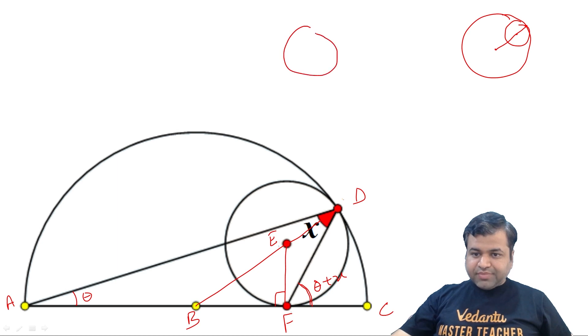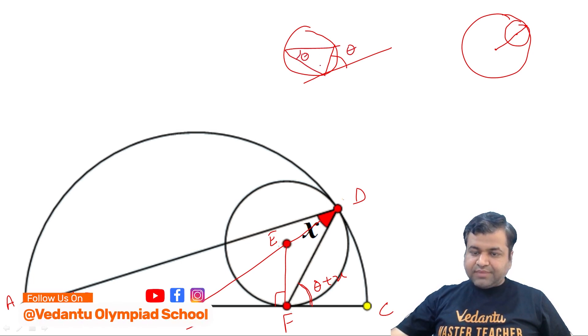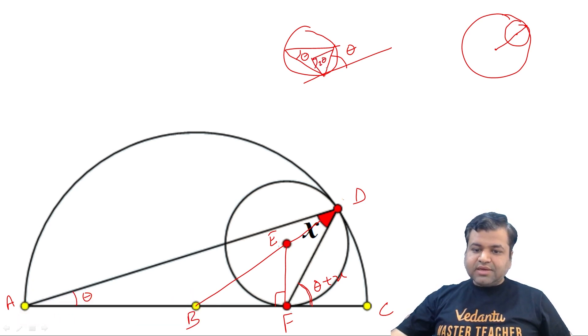And we know one other thing: if there is any tangent, that means angle FED should be 2 theta plus 2x.